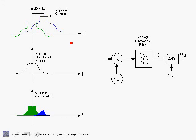Now let's discuss how we tackle adjacent channel interference and still meet minimum sensitivity requirements. In the direct conversion receiver, after mixing with the carrier the signal is passed through an analog baseband low-pass filter to get the in-phase component, then sampled and converted to digital. Here we sample at twice fs — 40 megahertz — since for 802.11a the sampling rate and total bandwidth including guard intervals is 20 megahertz.